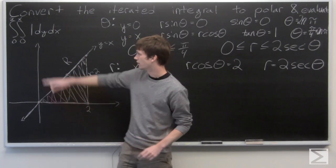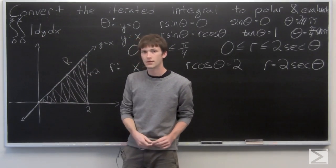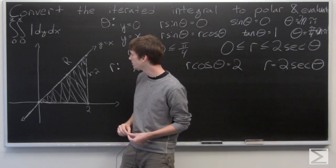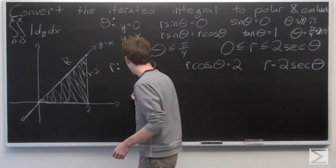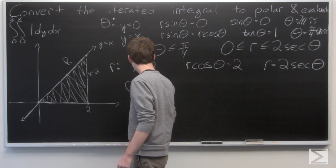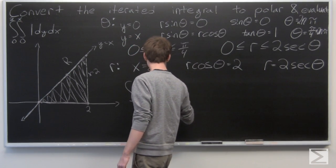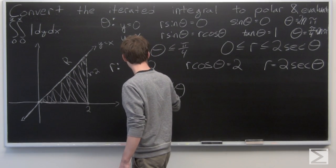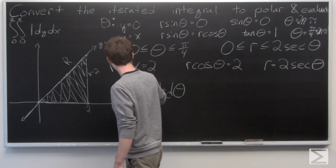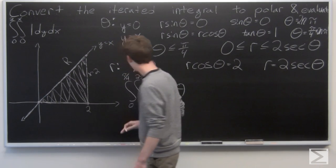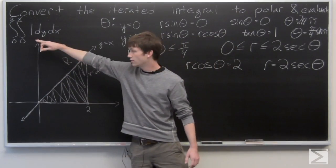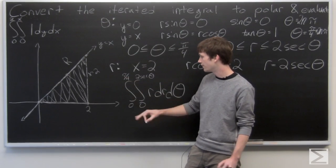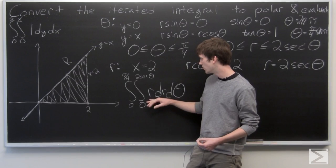Now we convert our element of area dy dx into polar coordinates. We know that dy dx becomes r dr dθ. So our iterated integral in Cartesian coordinates transforms into the iterated integral from 0 to π/4, and from 0 to 2·secθ, of r dr dθ.